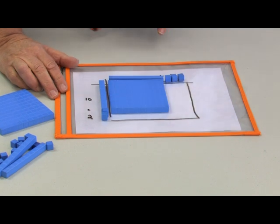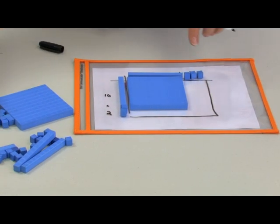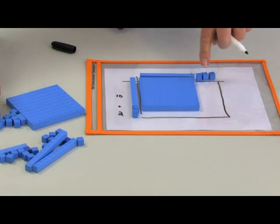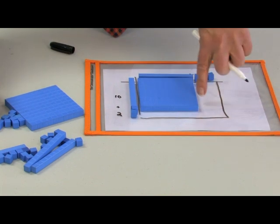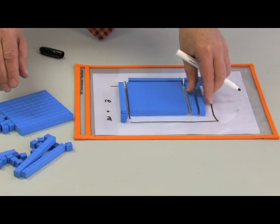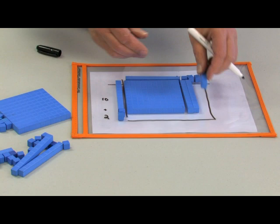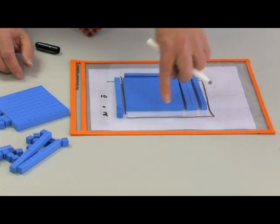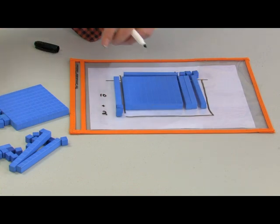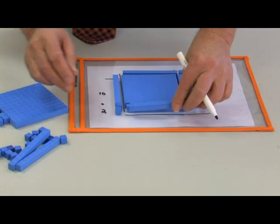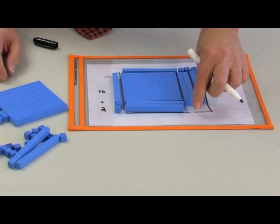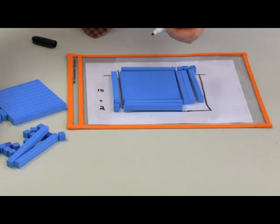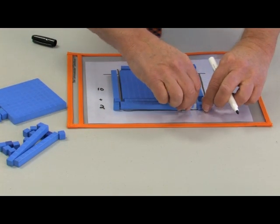Now 10 times 10, we know that is an array that is 100. We now know that we can multiply 10 times 3. This 10 by 3 rectangle right in here is going to be 30. We also know that the array down here is a 2 by 10 which is going to be 20.